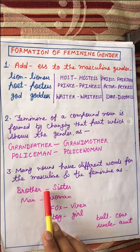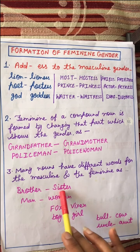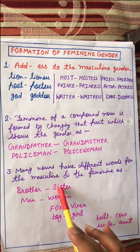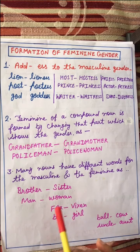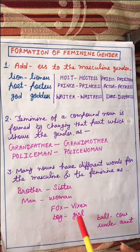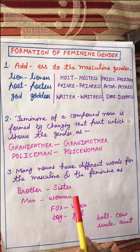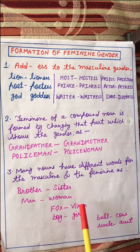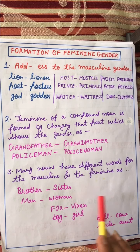More examples of completely different masculine and feminine word pairs: brother and sister; man and woman; fox and vixen; boy and girl; bull and cow; uncle and aunt. In all these cases, the spellings are completely changed — you cannot simply add a suffix to form the feminine.